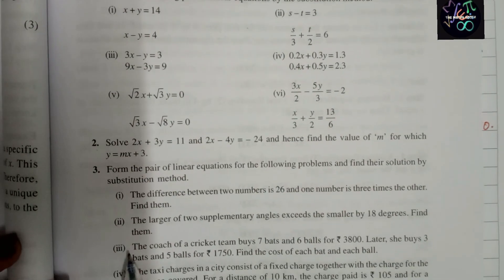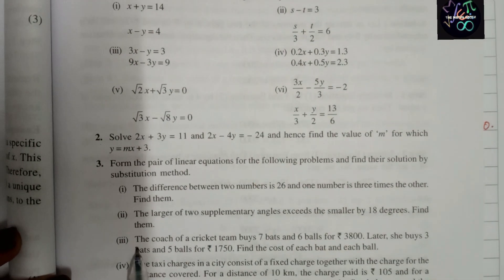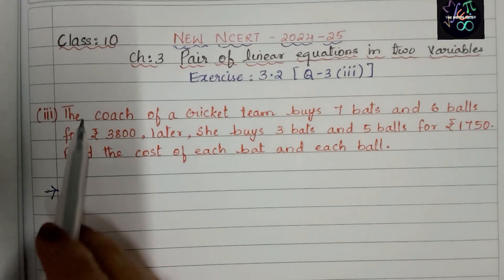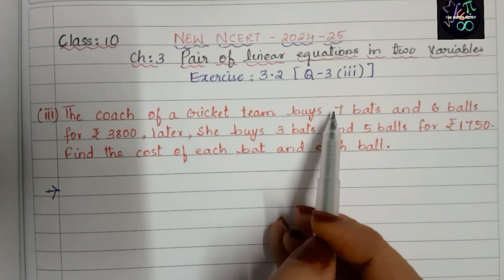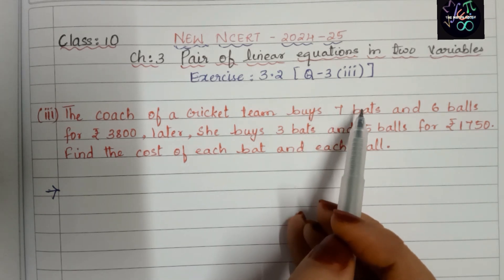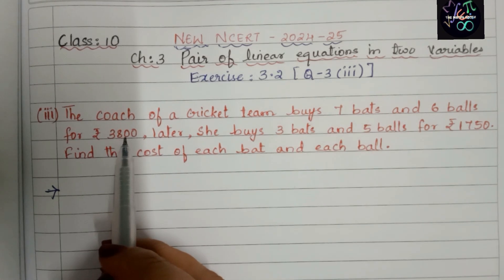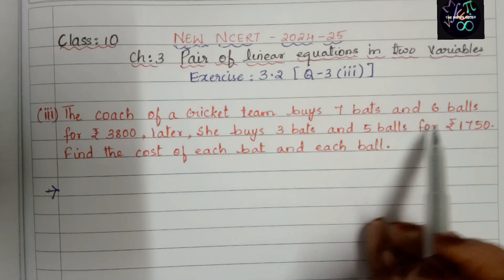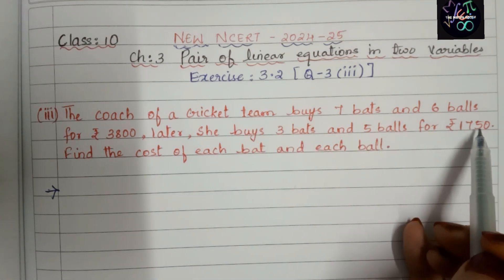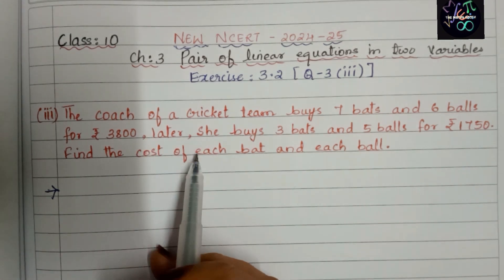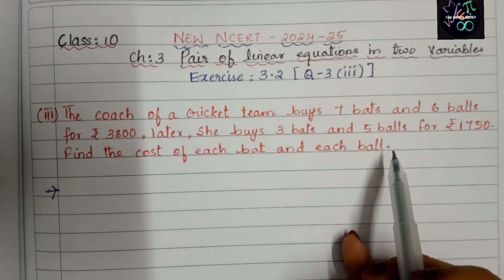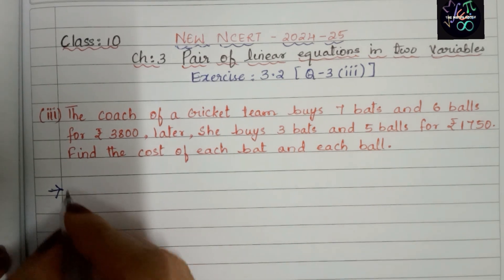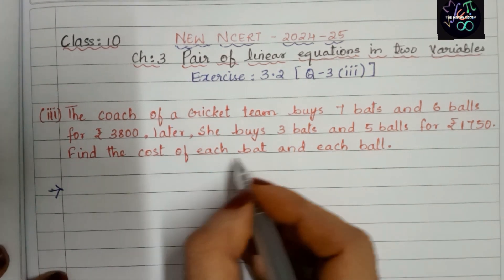This question we are going to solve now. The coach of a cricket team buys seven bats and six balls for rupees three thousand eight hundred. Later she buys three bats and five balls for rupees one thousand seven hundred and fifty. We have to find the cost of each bat and each ball.